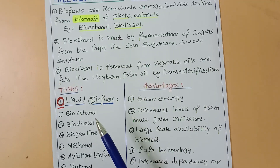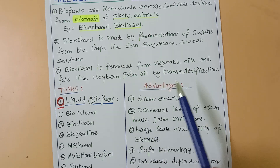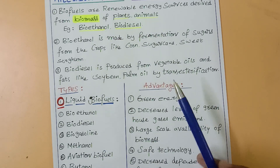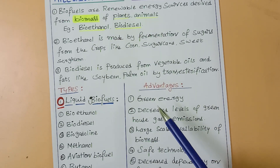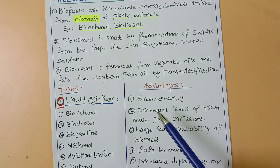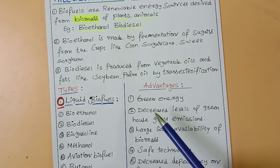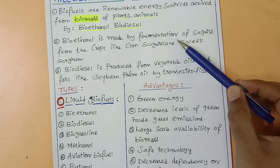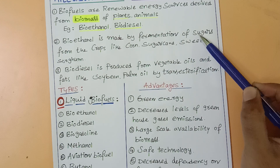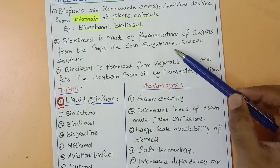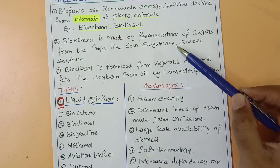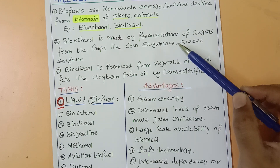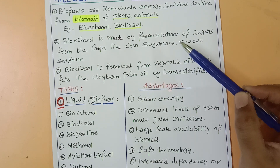Bioethanol — ethanol C2H5OH — is an important alcohol. In the fermentation process, yeast is added to sugars, causing ethyl alcohol breakdown. Yeast and fungus are added in this process.